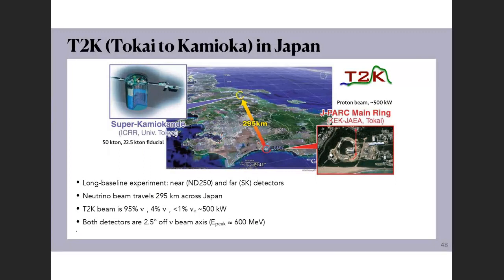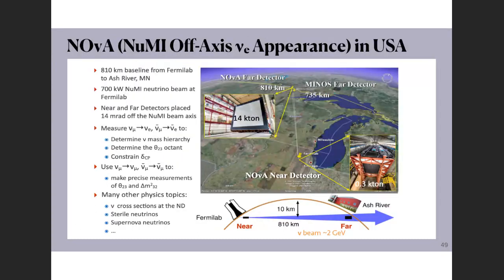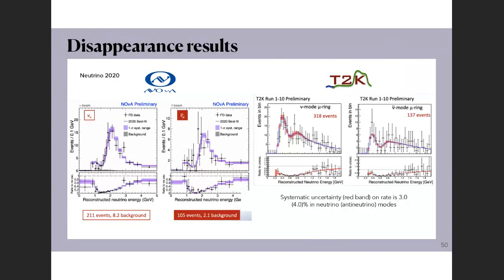The current experiments are T2K in Japan, sending a muon neutrino beam from J-PARC to Super-K at 295 km with peak energy ~600 MeV at 2.5° off-axis, and NOvA in the US at 810 km from Fermilab using the NuMI beam — the most powerful neutrino beam in the world — with peak energy ~2 GeV at 0.8° off-axis. Both experiments measure muon neutrino disappearance and electron neutrino appearance to determine the oscillation parameters including δ_CP.